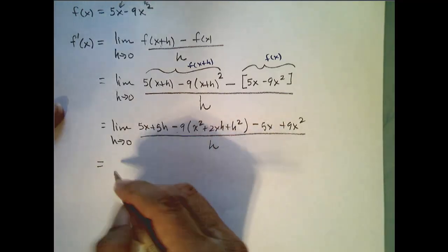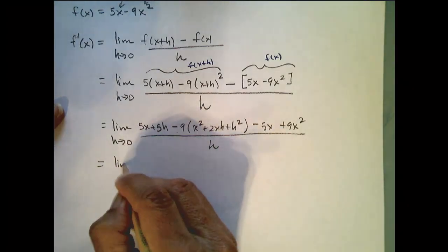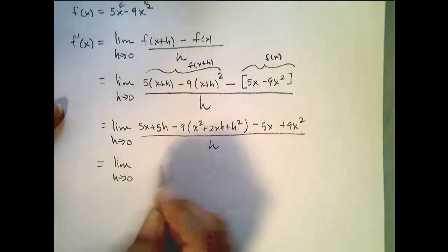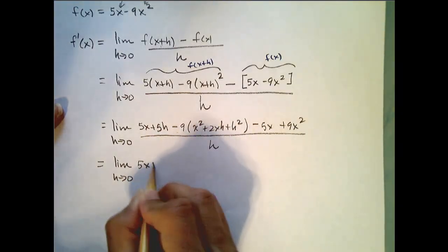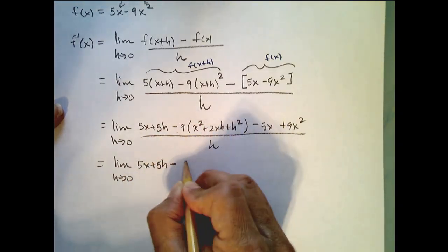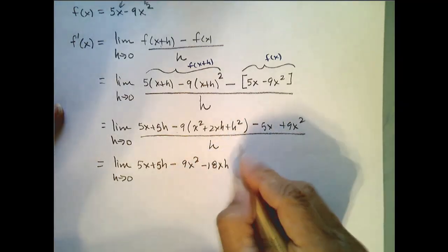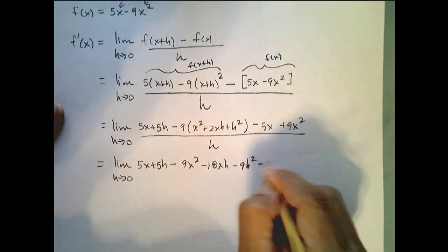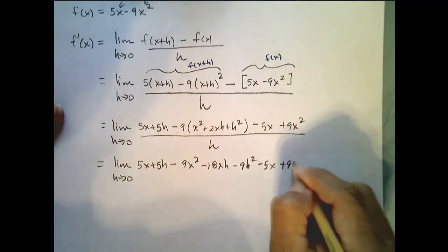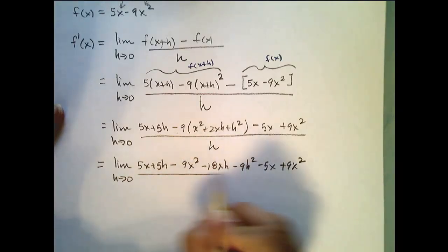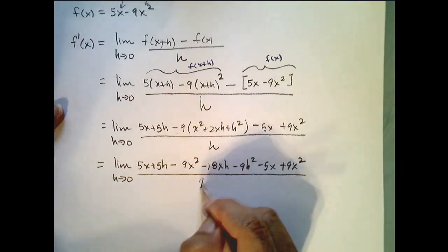So now I need to simplify even further. So this is the limit as h goes to 0, 5x plus 5h minus 9x squared minus 18xh minus 9h squared minus 5x plus 9x squared, all over h.